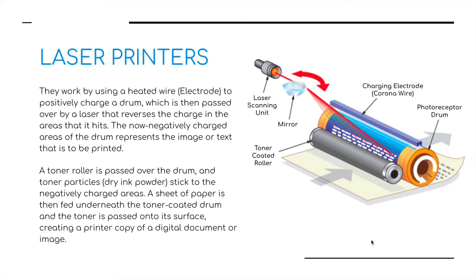The laser printer works in a very different way. It uses a heated wire and electrode to positively charge a drum, which is then passed over a laser that reverses the charge in the areas it hits. The now negatively charged areas of the drum represent the image or text to be printed. A toner roll is passed over the drum, and the toner particles — dry ink powder — stick to the negatively charged areas. A sheet of paper is then fed underneath the toner-coated drum, and the toner is transferred onto its surface, creating a printed copy of a digital document or image.